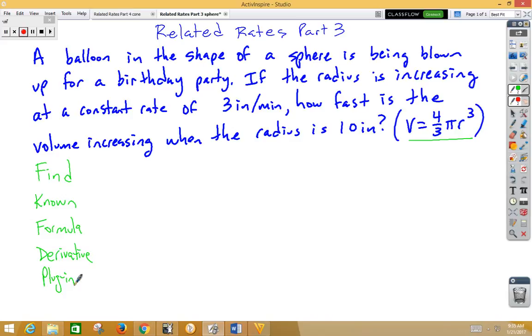So what is it we're trying to find? We're trying to find how fast is the volume increasing. That's a rate of change with respect to time. So we have dV/dt at a particular moment. They told us that moment is when the radius is 10 inches, so when r is 10.